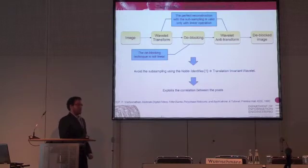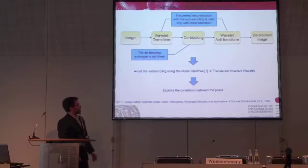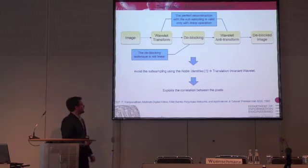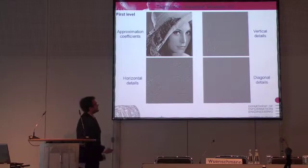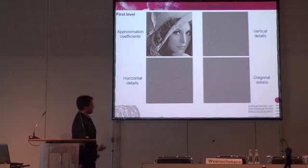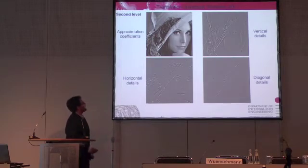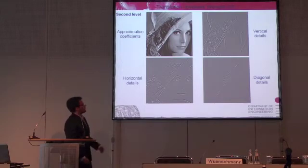What we can do is use novel identities about sub-sampling, which leads to the translation-invariant wavelet, which has the nice feature of achieving better results by exploiting the correlation between neighboring pixels. In the translation-invariant wavelet, already at the first level, we have the approximation sub-band here, and we can see vertical details, horizontal details, and diagonal details. You can see easily that going to deeper levels of the wavelet, we can change the frequency, and the size of the sub-band decomposition remains the same.